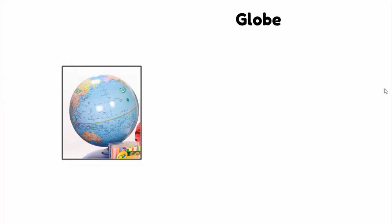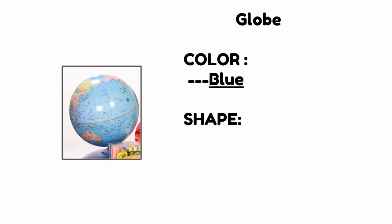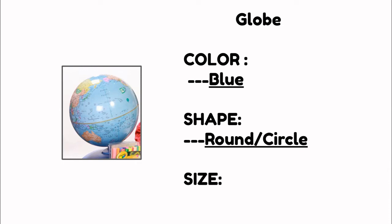Do you know what this object is? Yes! It's a globe. Can you tell me its color? Right! It's blue. What's the shape? That's right! It's round. How about the size? Is it small or big? Correct! It's small.